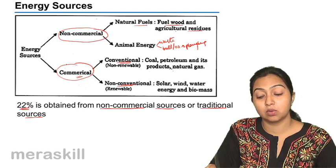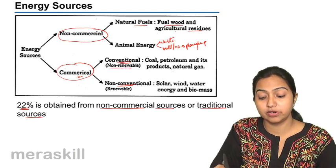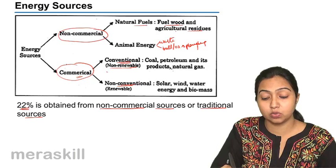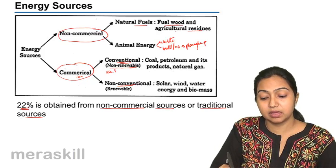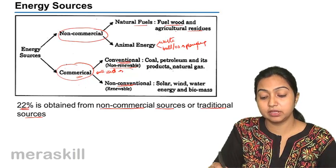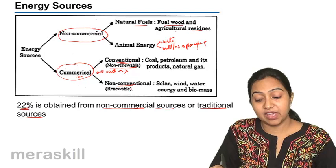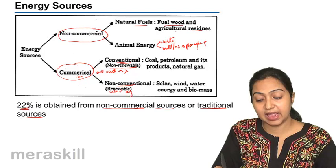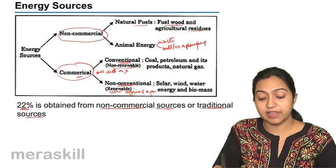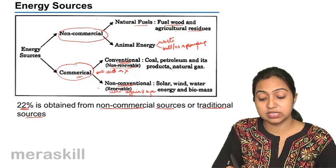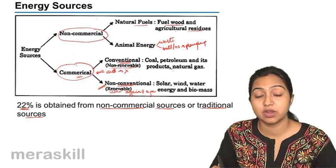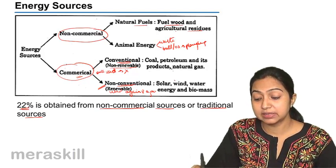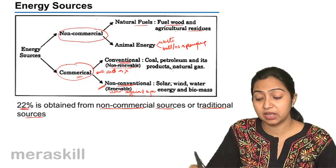Conventional energy sources are the ones that are non-renewable. They cannot be renewed — once used, they cannot be used again. Whereas renewable sources, the non-conventional ones, are the ones that can be used again and again. These non-conventional energy sources have been recently recognized and the government is trying to promote them, because they are renewable and can be used again and again.